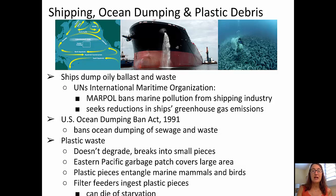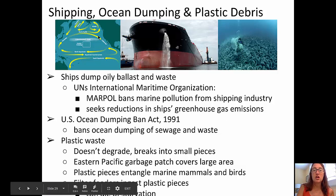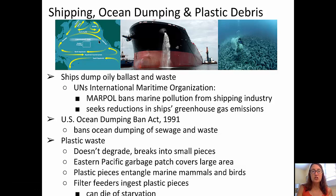We know that plastic waste is a problem — it doesn't degrade. In fact, it breaks into small pieces, which are found in the Eastern Pacific Garbage Patch. In the top left picture, you can see the dash in the center of this current gyre — that is the Eastern Pacific Garbage Patch. In this region there are very small pieces of plastic, several millimeters in size, not whole plastic jugs or bags. These pieces can entangle marine mammals and birds. Filter feeders ingest these and can die of starvation as a result.